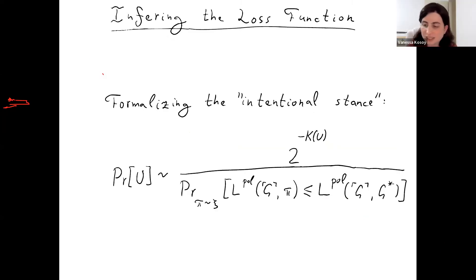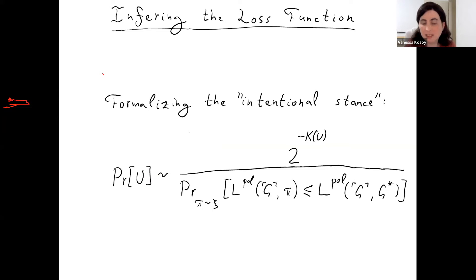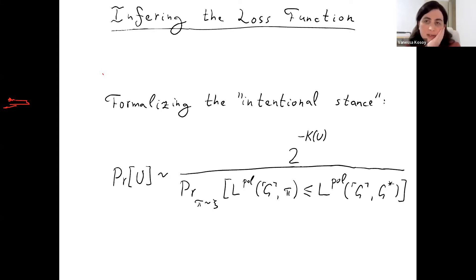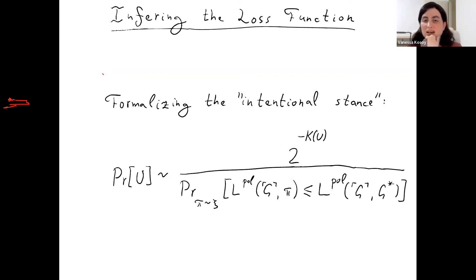Given that we know how to assign intelligence to agents according to loss functions, we can also try to invert this process to infer the loss function of the agent. Suppose you're given an agent and you're trying to find what loss function or utility function is most reasonable to assign to it. You can think of this as formalizing the intentional stance — looking at the system and interpreting it as optimizing for some goal.